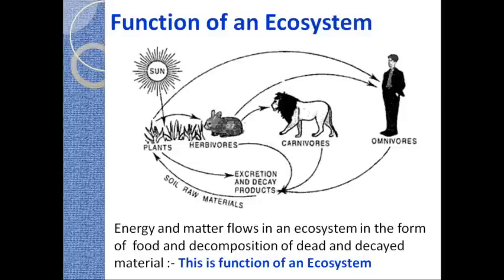In any ecosystem, this transfer of energy and matter is very important because until this transfer takes place the ecosystem cannot be stabilized. If the transfer of energy and matter keeps going, the ecosystem will remain stable and in a healthier mode. If the transfer of energy gets stopped because of any external reason, it will bring that particular ecosystem under stress, and if it continues for a longer period the ecosystem may have very high chances of being collapsed.